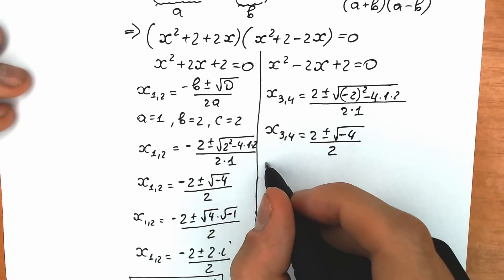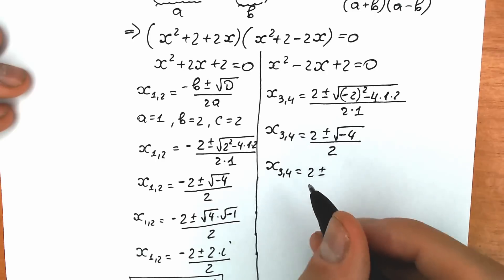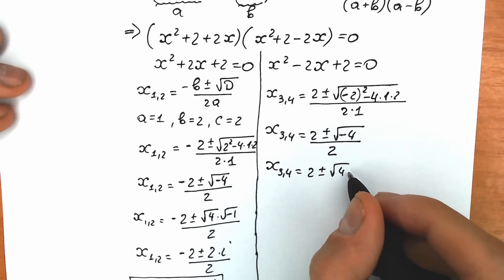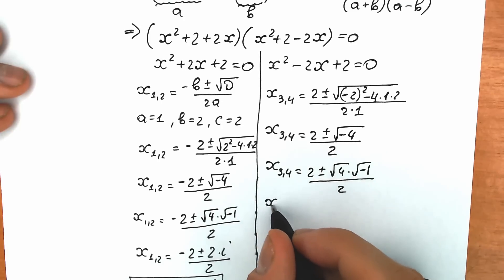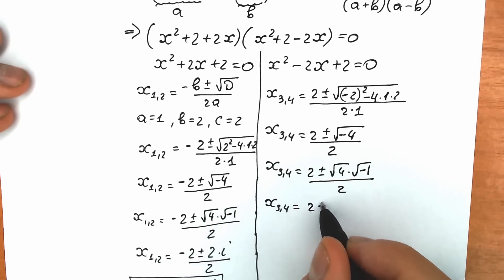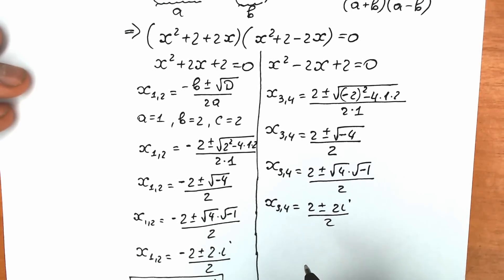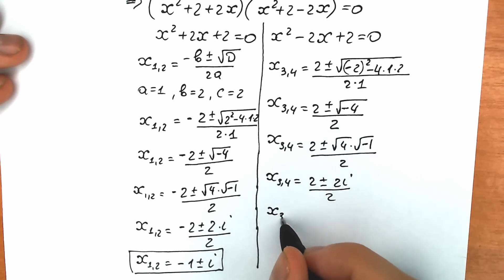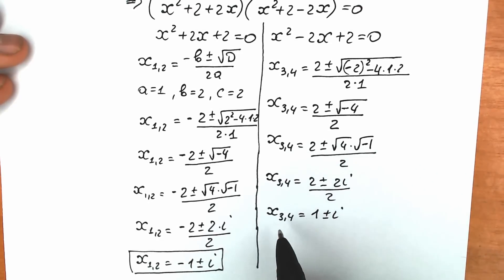Following the same algorithm as before, we write √(−4) = √4 · √(−1) = 2i. So x₃,₄ = (2 ± 2i) / 2. Dividing both numerator and denominator by 2, we get x₃,₄ = 1 ± i.